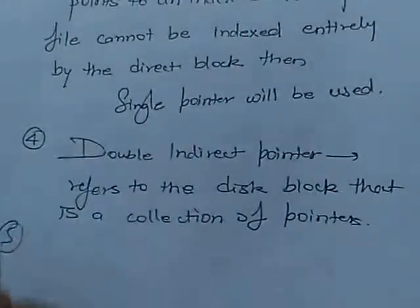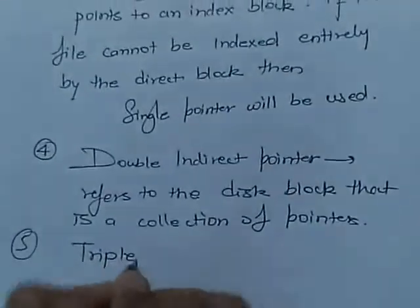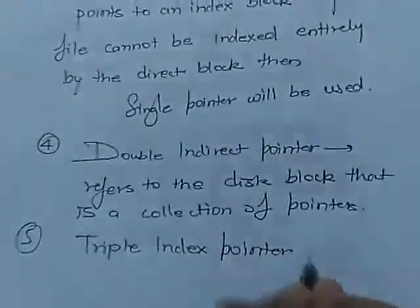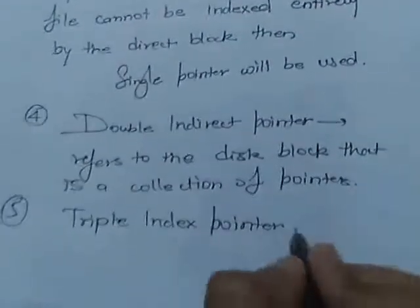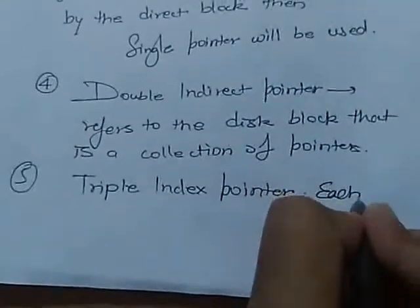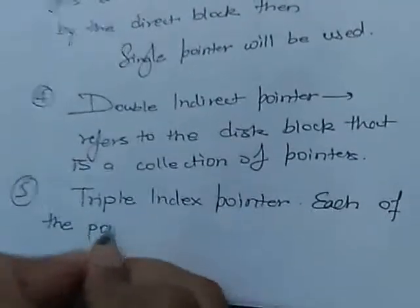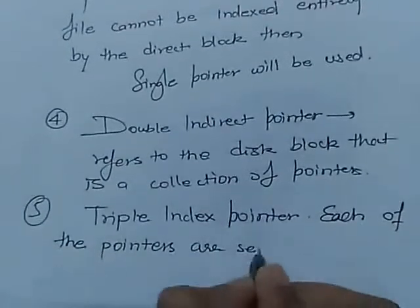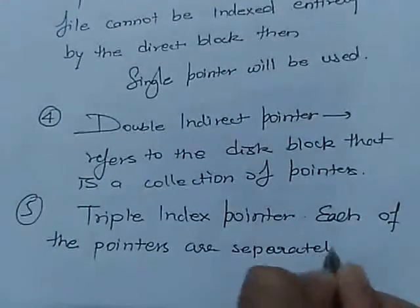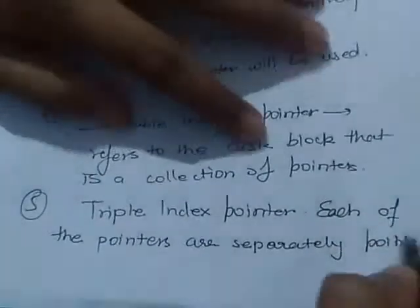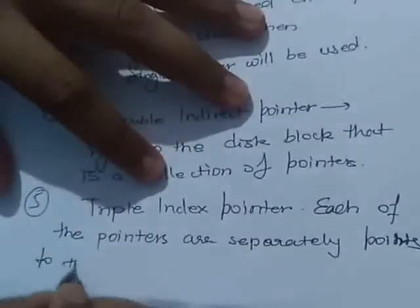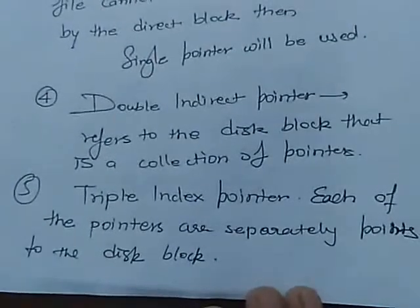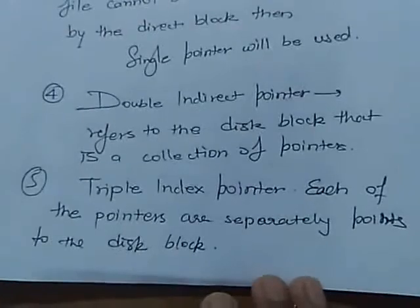Finally, we have a triple indirect pointer. It refers to a collection of pointers, and each of those pointers separately points to a disk block. This means here we have a pointer to a pointer, and that pointer then reflects to the data. Hope you have understood this. Thank you very much.